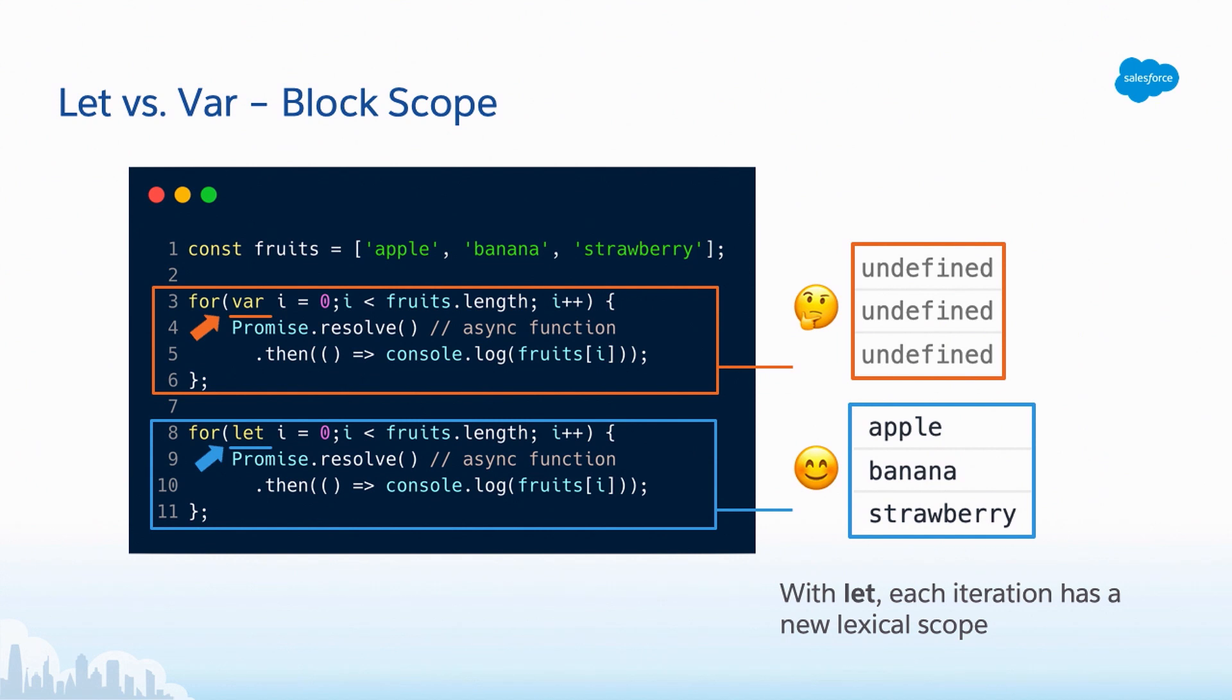Okay. However, in our first example, we get some unexpected behavior. We get undefined three times. Why does this happen? Well, it's because by the time that asynchronous work is done completing, that i value is already incremented. And in this case, i is already going to be three. We don't have a third index in our array. It only goes up to zero, one, two. That's why it's undefined. However, in our second example with let, each iteration gets a new lexical scope. And so i keeps context throughout each loop. And we're able to keep track of what that i is for each iteration and get apple, banana, and strawberry as we expect. Okay. So that's block scope.